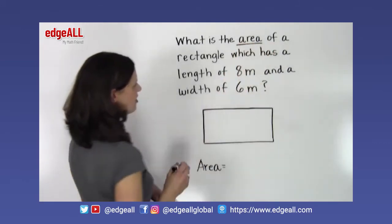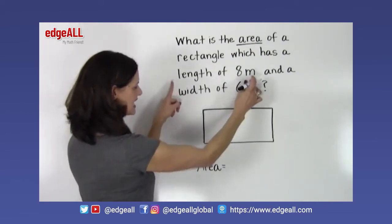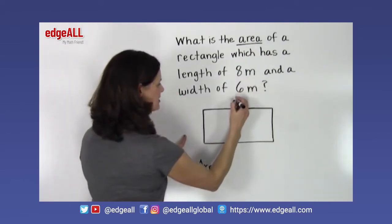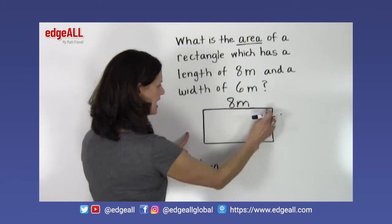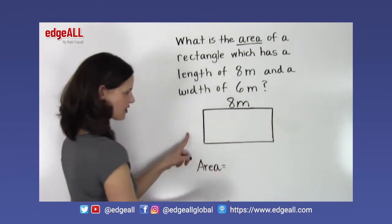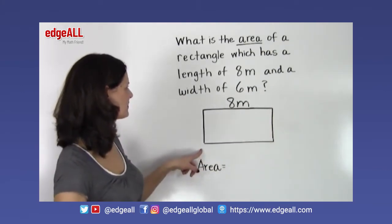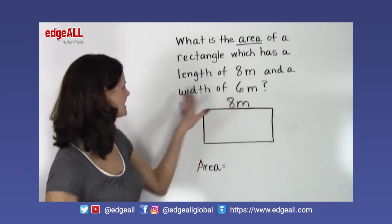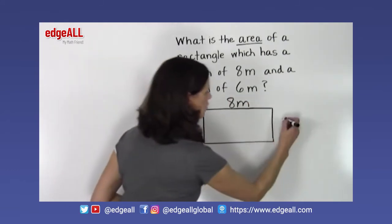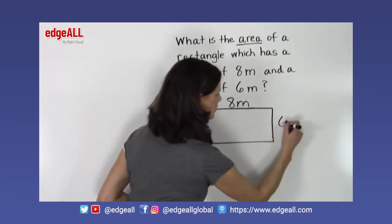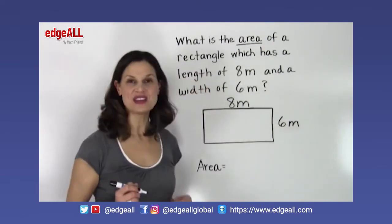We're looking for area. The problem tells us it has a length of 8 meters, so I'm going to label this long side here 8 meters — and we know the opposite side is 8 meters as well. It has a width of 6 meters, so this width here will be labeled as 6 meters.